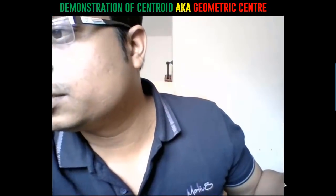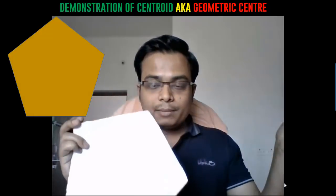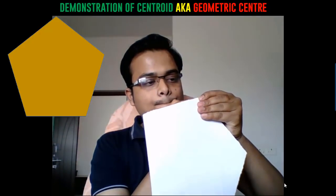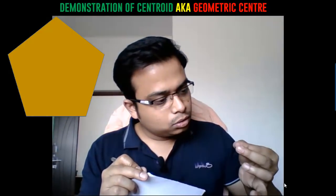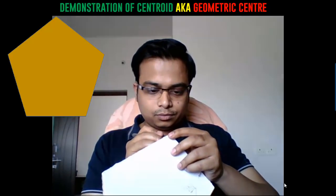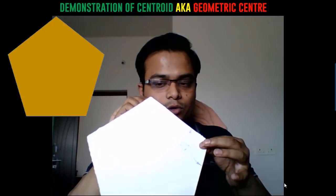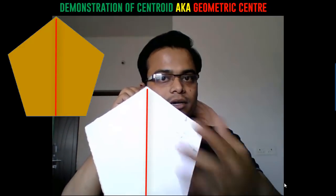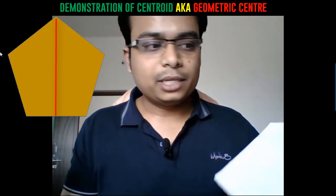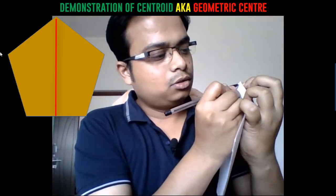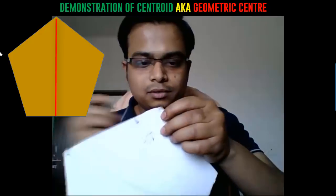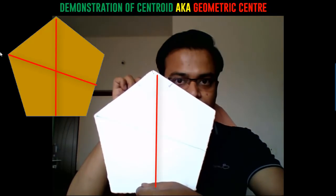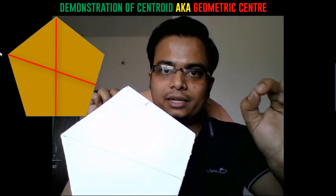Let's take this regular pentagon as another example and repeat the same experiment. I suspend this regular pentagon with respect to one point, all sides being equal, and draw a line directed towards the Earth. Then I do the same with another point. The intersection of these two lines gives you the location of the geometric center, also known as centroid.